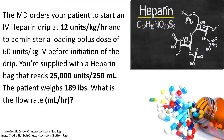The first problem says the MD orders your patient to start an IV heparin drip at 12 units per kilogram per hour and to administer a loading bolus dose of 60 units per kilogram IV before initiation of the drip. You're supplied with a heparin bag that reads 25,000 units per 250 mls. The patient weighs 189 pounds. What is the flow rate?